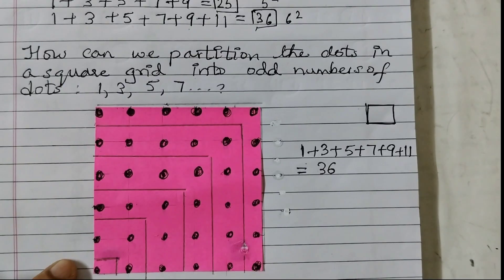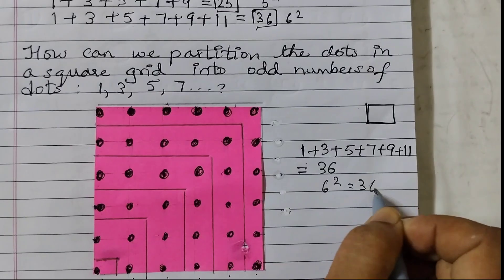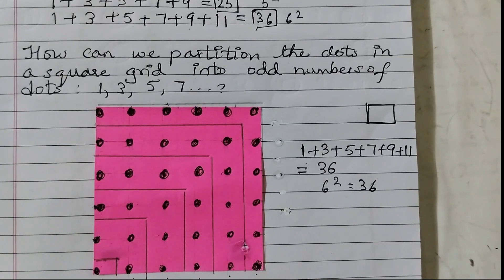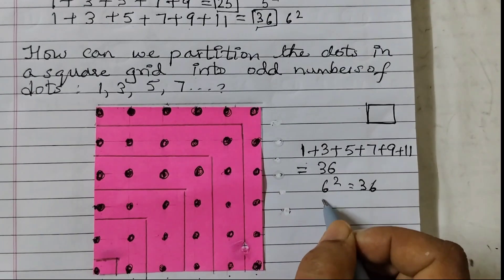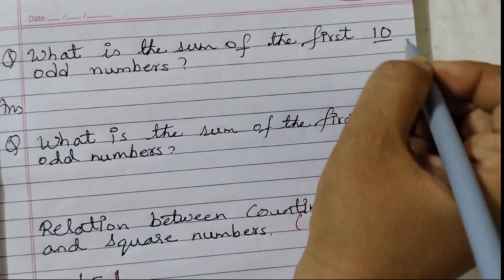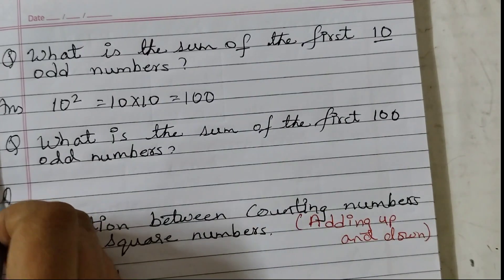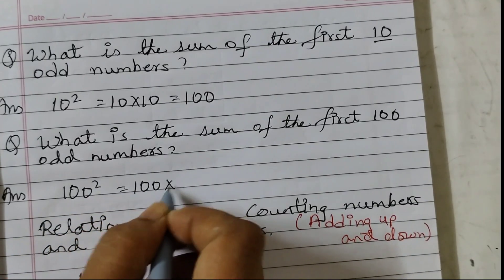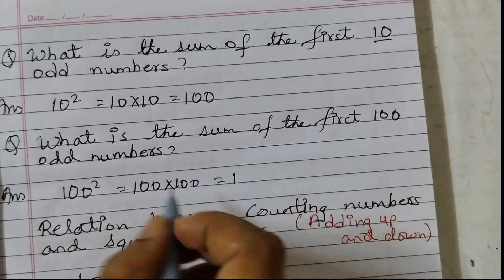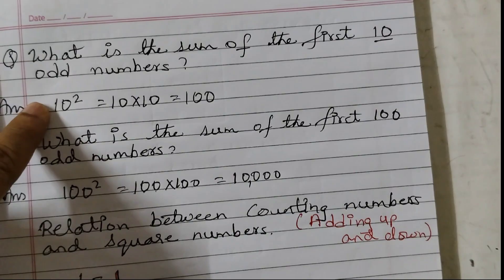Now by drawing a similar picture, can we find out what is the sum of the first 10 odd numbers? Here we used 6 odd numbers and got 6 squared which is 36. So if there are 10 odd numbers the answer would be 10 squared. Similarly, what is the sum of the first 100 odd numbers? Same way — 10 odd numbers gives 10 squared, 100 odd numbers gives 100 squared. For the first 10 odd numbers: 10 squared is 10 times 10 equals 100. For the first 100 odd numbers: 100 squared is 100 times 100 — multiply 1 by 1 and count the zeros: 1, 2, 3, 4 zeros — so 10,000. You don't have to actually draw it; you can use the pattern to find the answer.